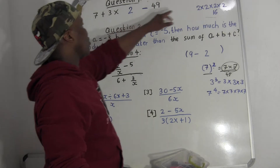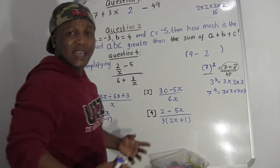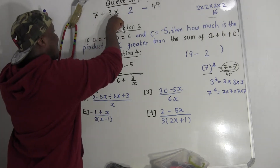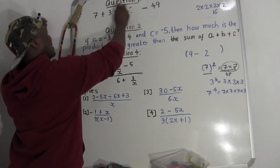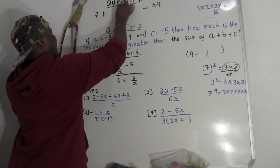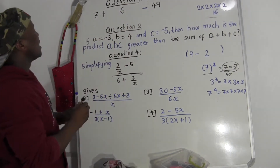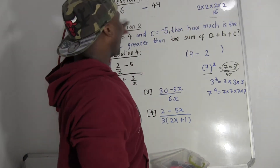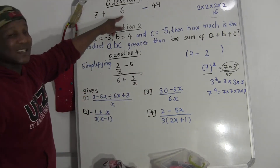Do you have another division? No. Do you have multiplication? Yes — three times two equals six. So if I remove this, I write six. Now do I have another multiplication? No. Do I have addition? Yes — seven plus six equals thirteen.